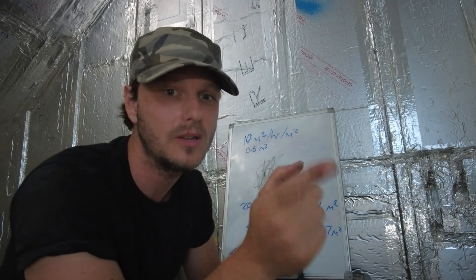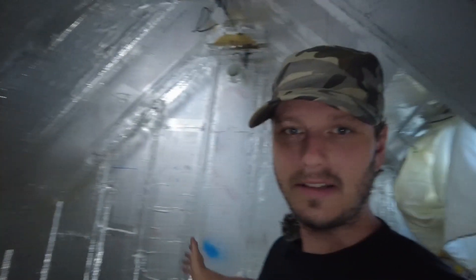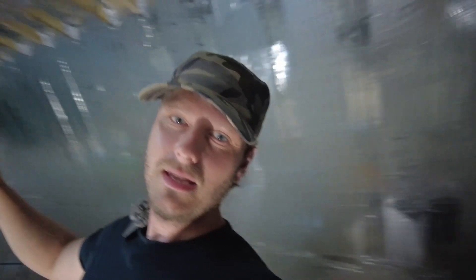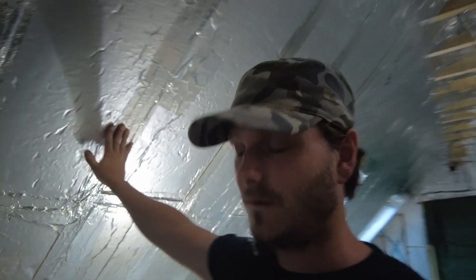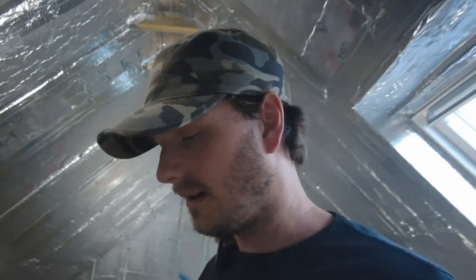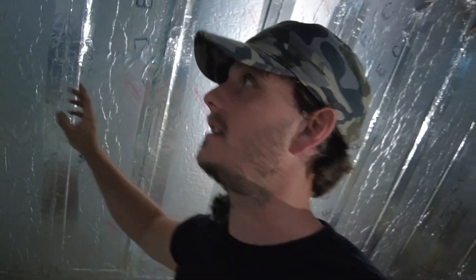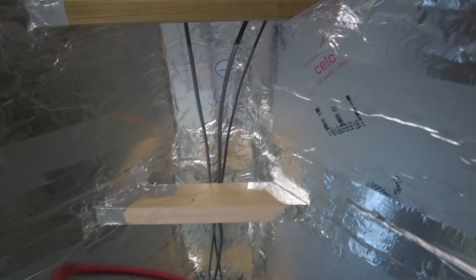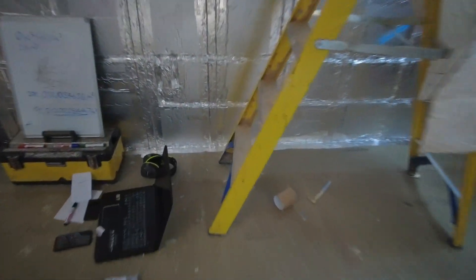I'm going to quickly run you around and show you exactly what I've done. You'll notice everything's taped up - it's like a bloody spaceship in here. This is insulation between the rafters, and I've taped over it. This is effectively my vapour barrier as well as an airtight barrier - invariably they're kind of the same thing. I've just used standard foil tape for this, and up the top I've taped all the way around.